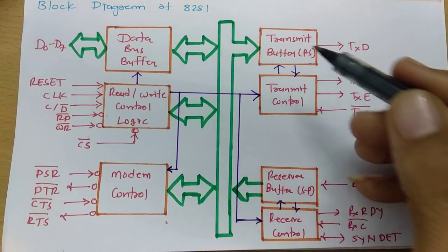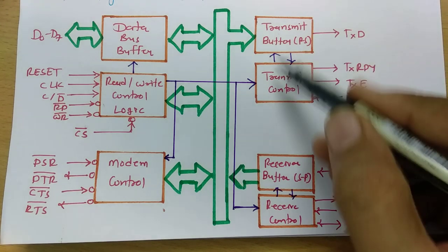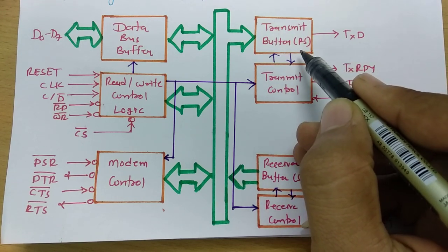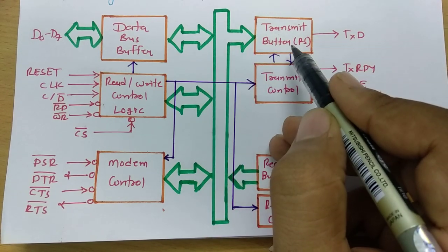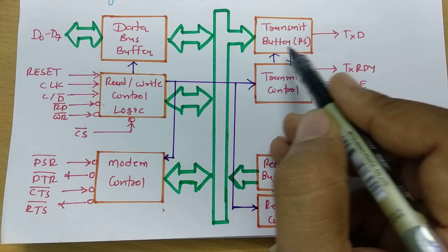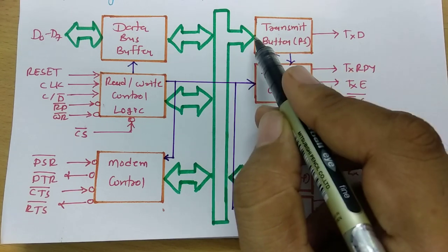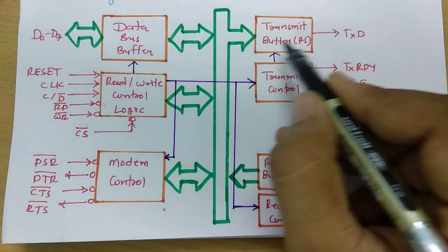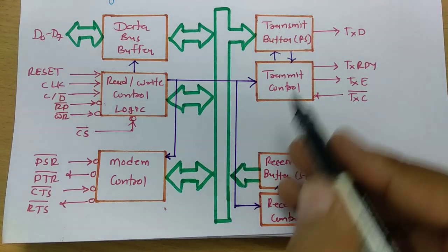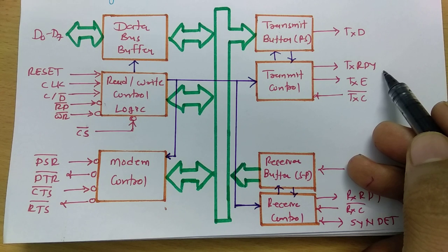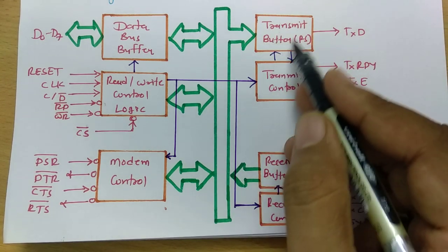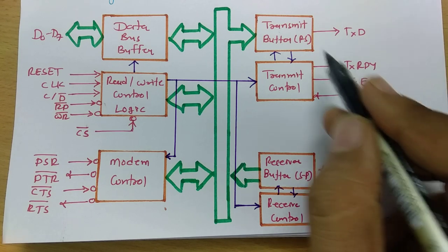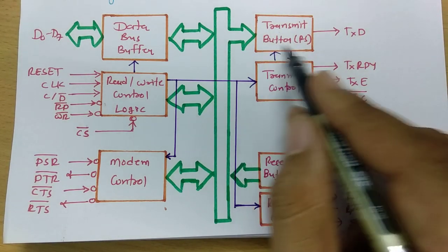The transmitter section has serial data transmission connected with the transmitter buffer. The transmitter buffer receives parallel input and converts it to serial output — it is a parallel-to-serial converter. In the transmitter control, the Transmitter Ready signal, when active high, indicates the transmitter buffer is empty so the MPU can provide more data to transmit. The TXE signal — Transmitter Empty — indicates the output register is empty, and goes active high when empty. A transmitter clock signal provides synchronization to prevent data loss.